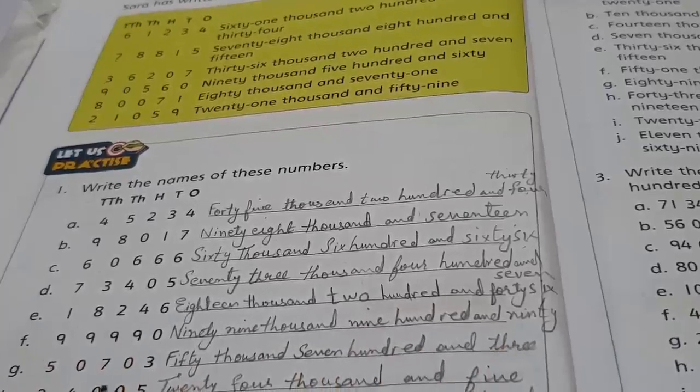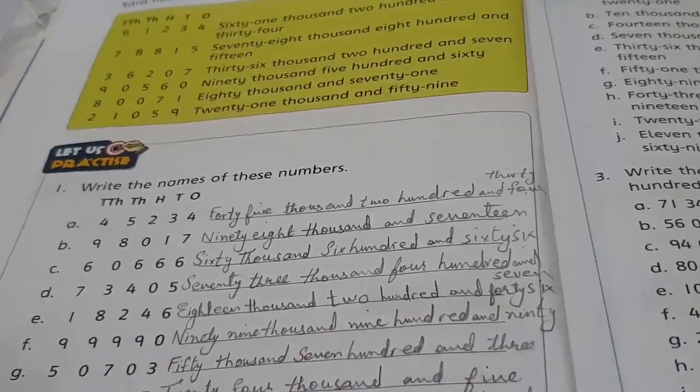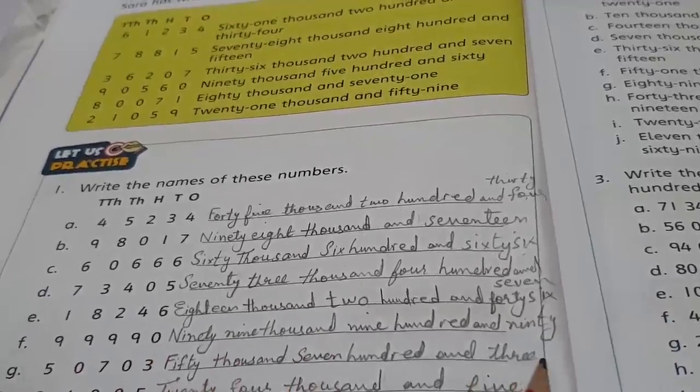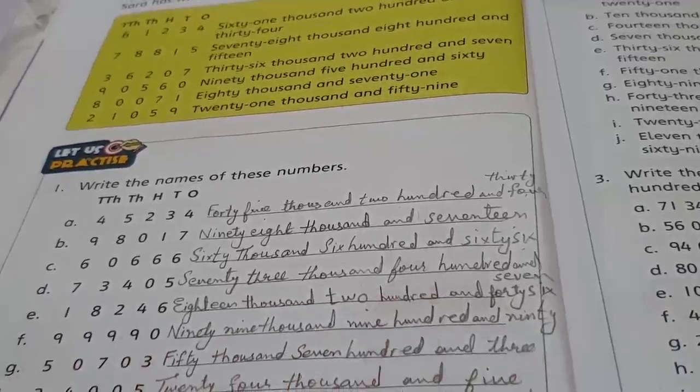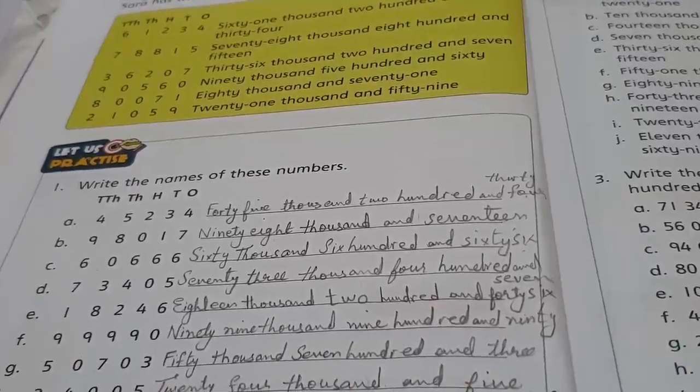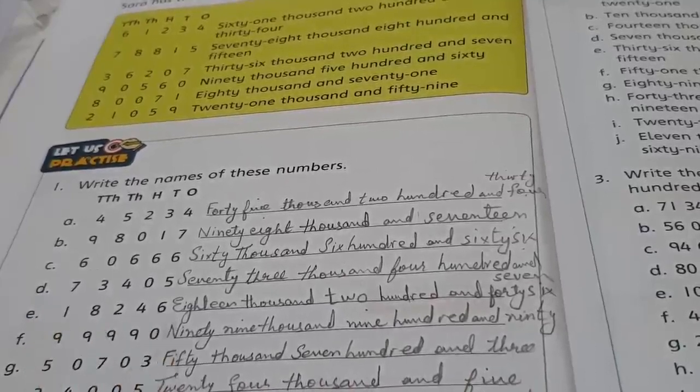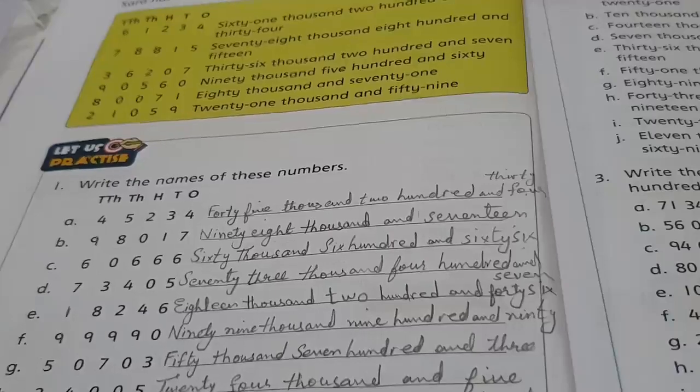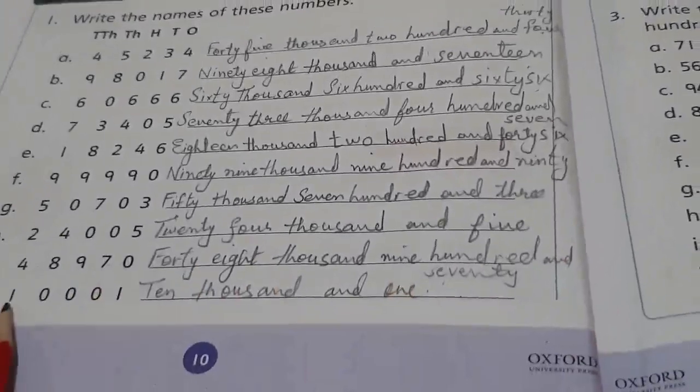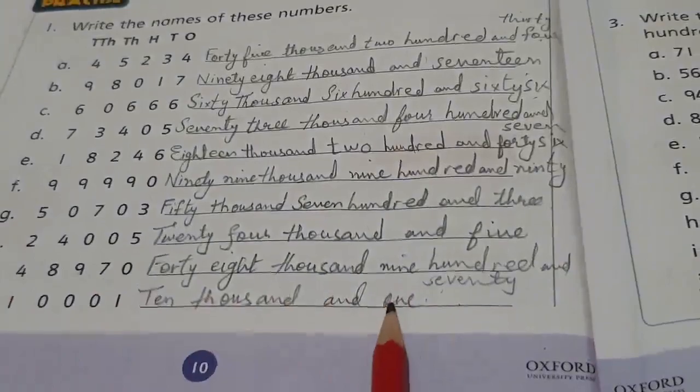18246 - eighteen thousand, two hundred and forty-six. 99990 - ninety-nine thousand, nine hundred and ninety. 50703 - fifty thousand, seven hundred and three. 24005 - twenty-four thousand and five. There are no numbers written in the column of tens and hundreds, so we didn't mention them while writing the names. 48970 - forty-eight thousand, nine hundred and seventy. 10001 - ten thousand and one.